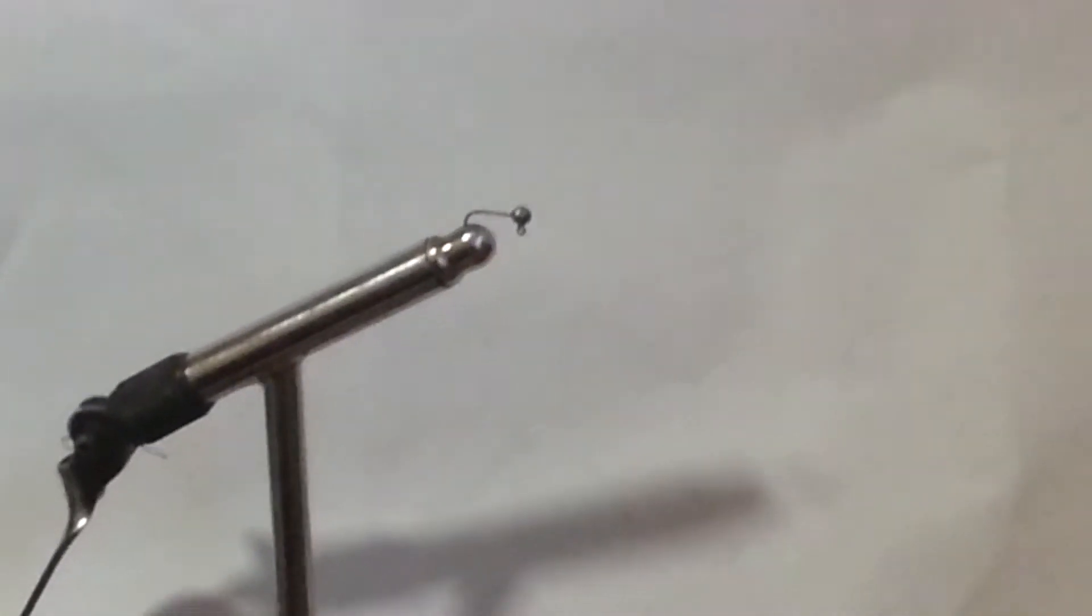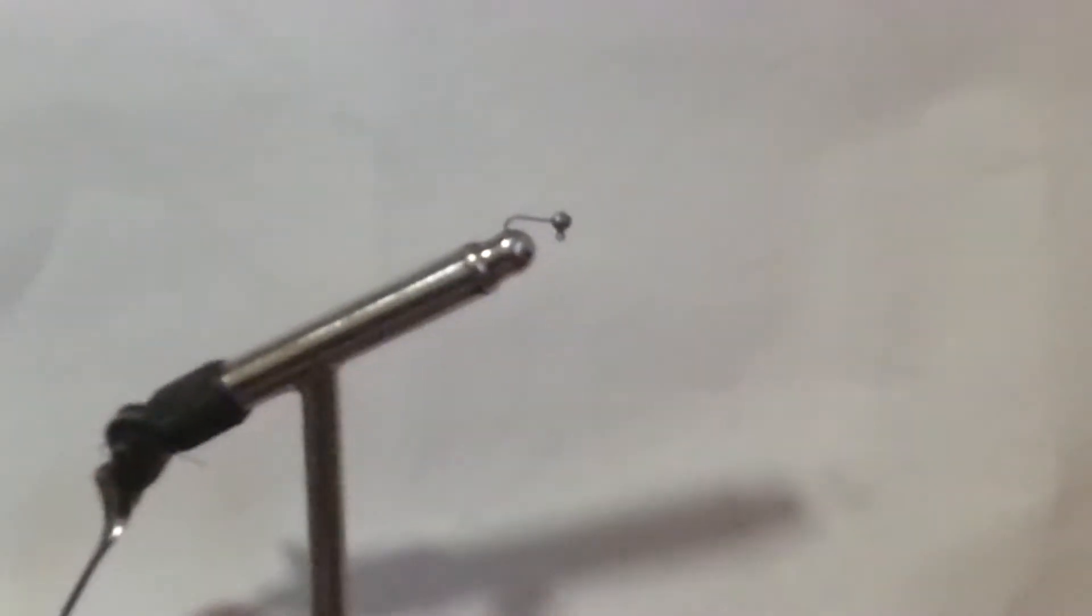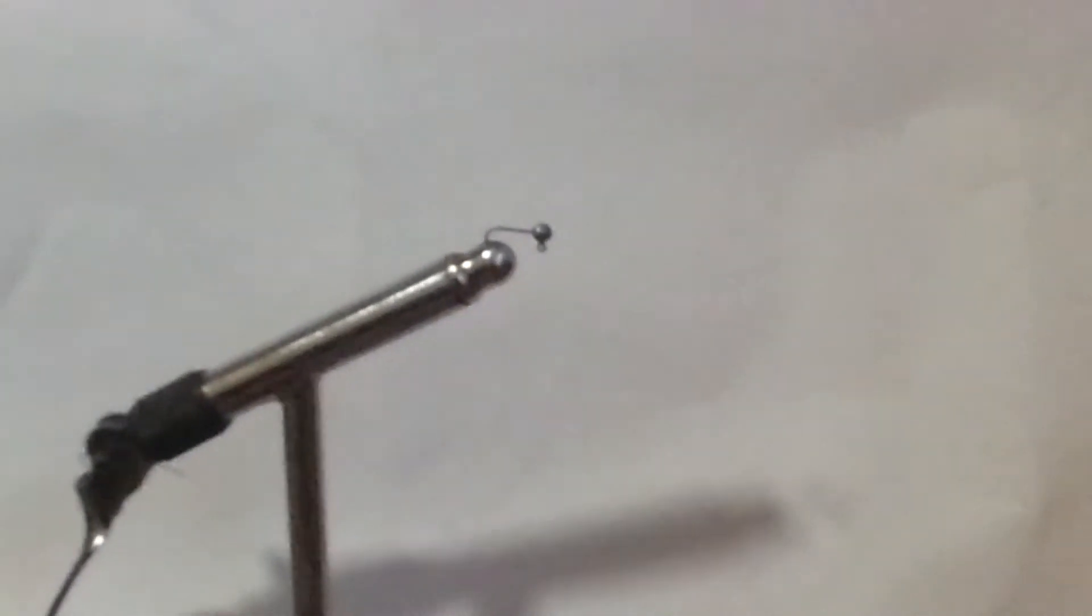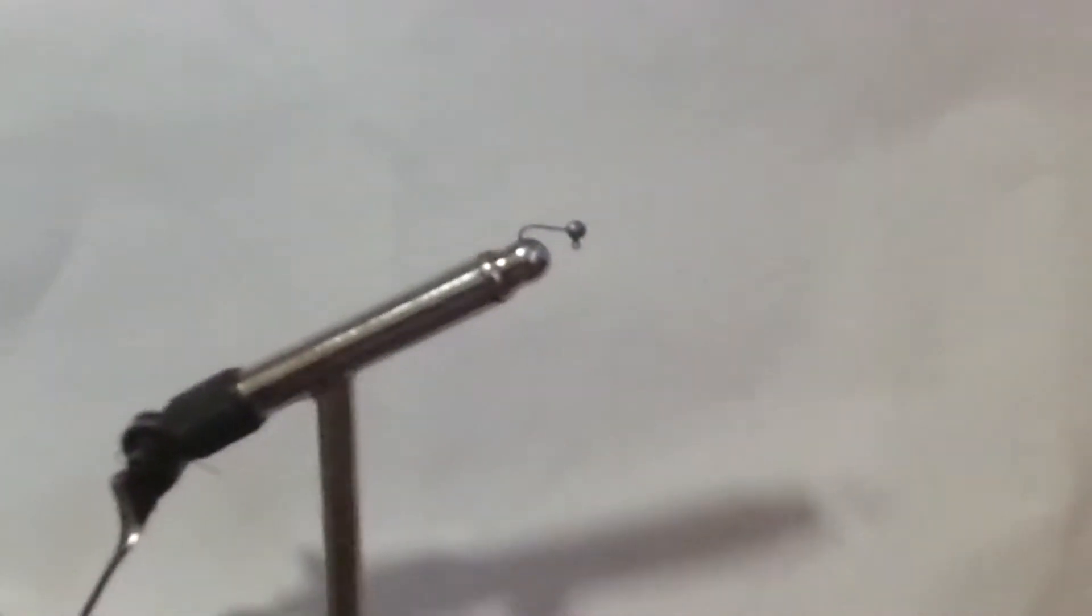I figured I'd shoot a quick video showing how I tie these jigs. These are 1/64th ounce number 12 jigs. I've not been able to find this type of jig tied commercially, so I always do my own.